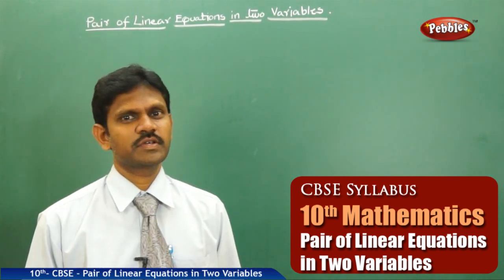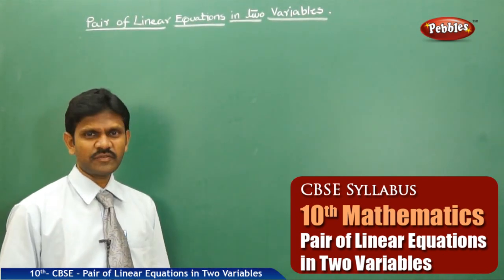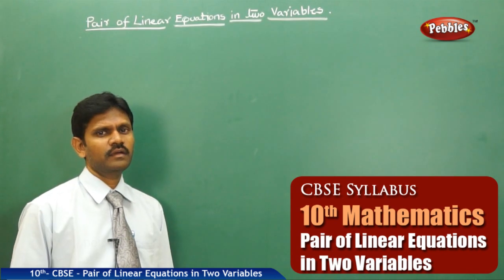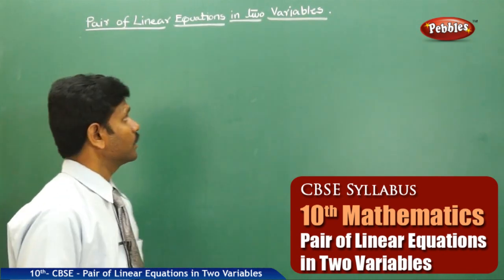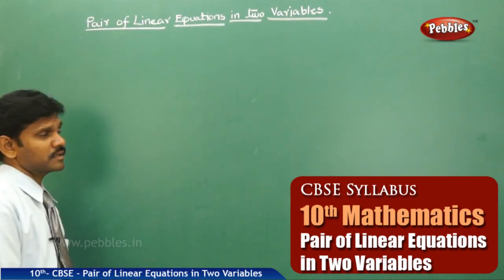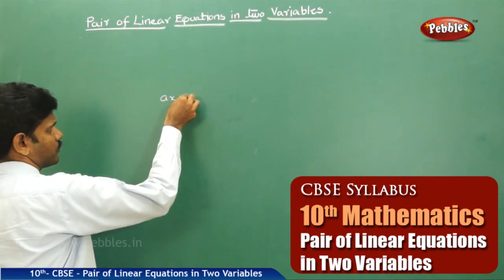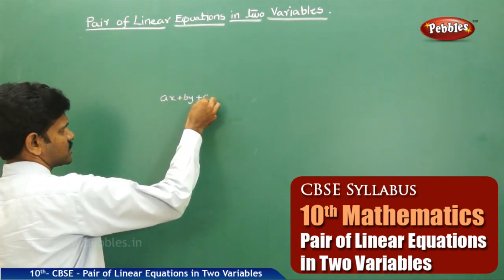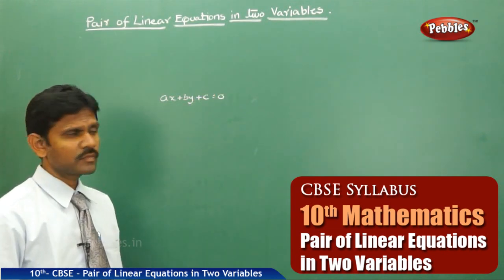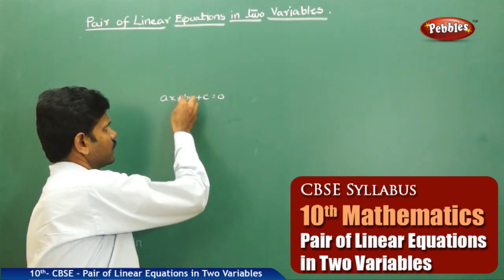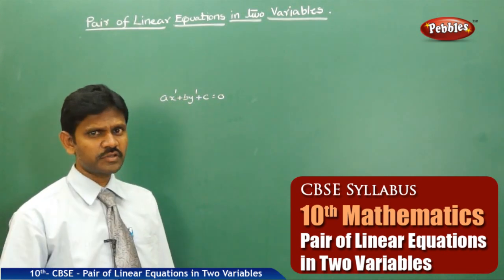What is meant by a linear equation? In terms of x and y, a first order degree equation is called a linear equation. That is, Ax plus By plus C is equal to 0.